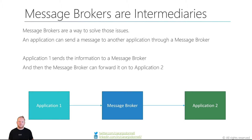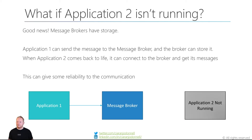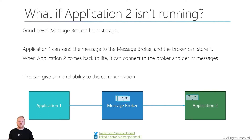Message brokers can serve as an intermediary for us. They can sit in the middle between application one and application two and solve some of these challenges. Application one can send the information to the message broker, and then that message broker can receive it and forward it on to application two. For that first challenge — if application two is not running — message brokers will have some form of storage. Application one can send that information as a message to the message broker, it will store that up, and when application two comes back to life, the message broker is able to forward on those messages. This gives us good reliability, so even if application two is unavailable, application one is still able to communicate with it.